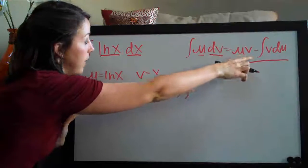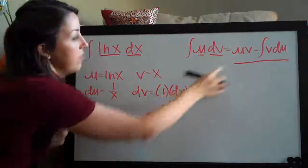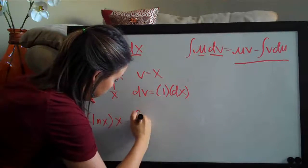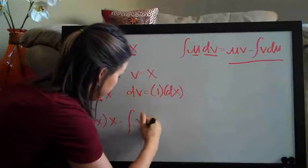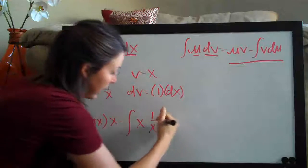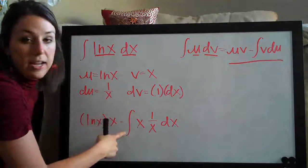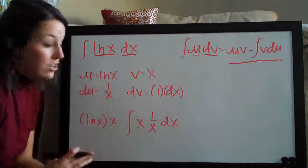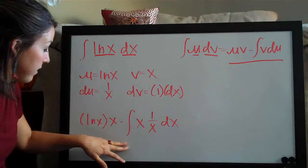So first we have u times v. So u is ln of x and then v is x and then we have minus the integral of v du. So v is x and du here is 1 over x. And then of course we have to add dx simply because this integral sign here and dx are notation that always go together. So you can't have an integral without dx. It's really just notation but it needs to be there.